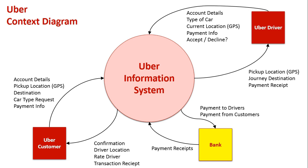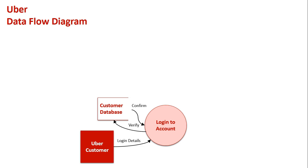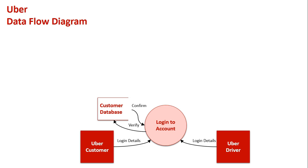Now let's look at Uber from the perspective of a data flow diagram. With a data flow diagram, it's always good to start with our external entities. Our first external entity is once again the Uber customer, who needs to log into the system — their details are checked against the customer database and once verified, they're in. Uber drivers do the same, but there would be a separate database for drivers since we store different information about them, such as their car type and work locations. So there would be two separate databases using some sort of relational model.